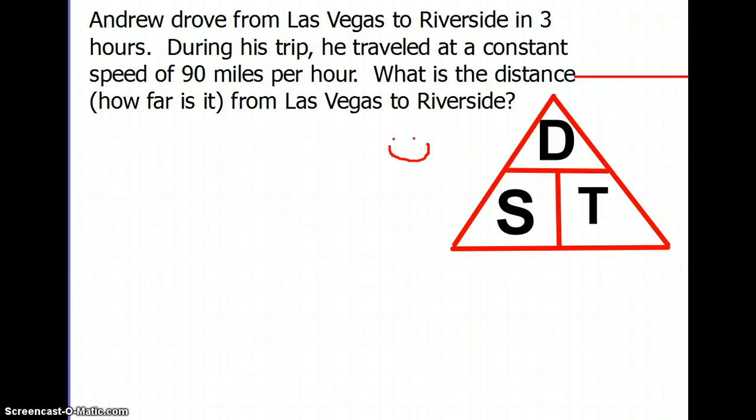Okay, so we are going to try to find distance. So if we cross out distance, we are left with speed times time. Because distance equals speed times time.